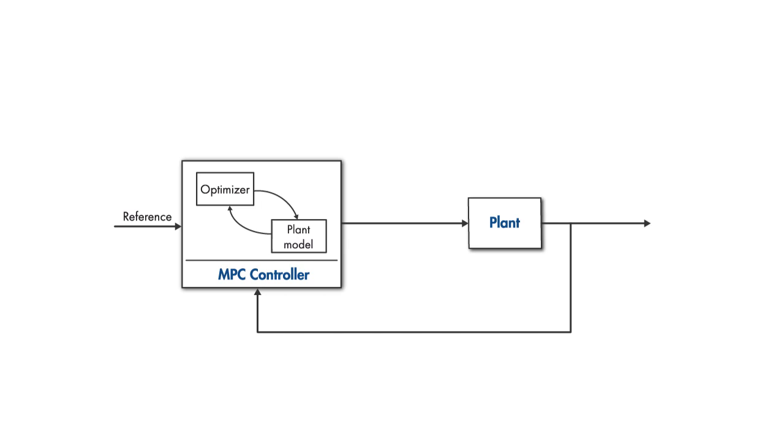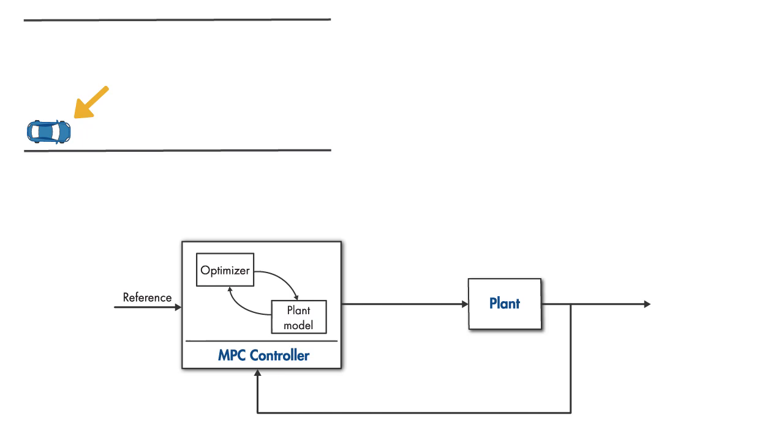The following example walks through these steps. Let's say that this is an autonomous car controlled by an MPC controller to keep it in the middle of this lane. MPC can handle MIMO systems like this one, but for simplicity, we'll assume that the accelerator is fixed, the longitudinal speed is constant, and only the steering wheel angle is being adjusted to control the lateral position of the car.